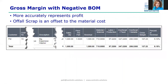Now look at the beautiful gross margin. Once we've made this change to add that negative BOM component and recalculated the cost model, it's significantly more sane. Remember the gross margin report before showed a loss of almost $88. Now that we know we can sell this scrap, this is much more realistic.